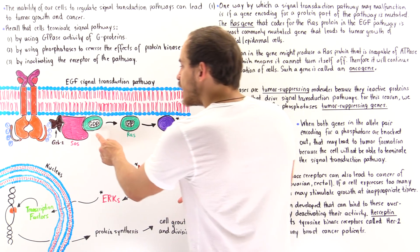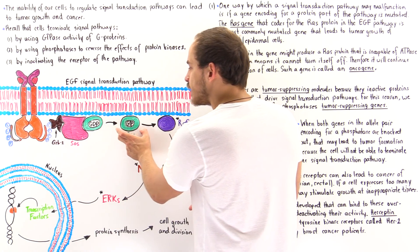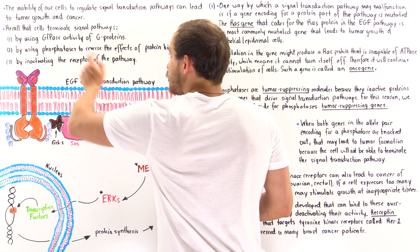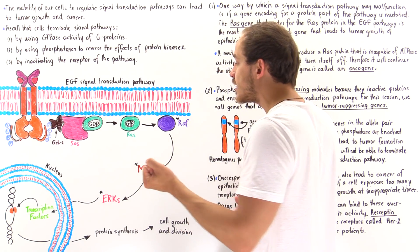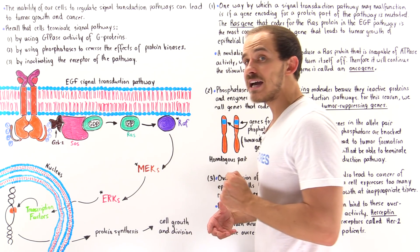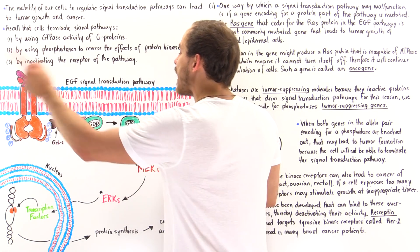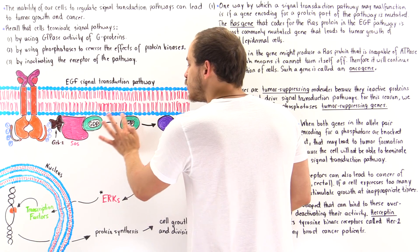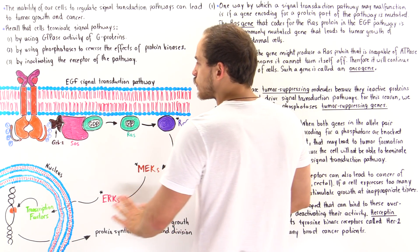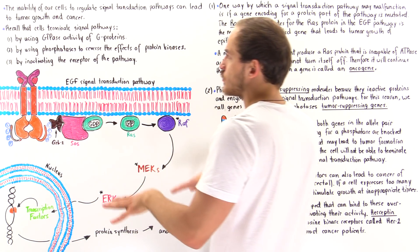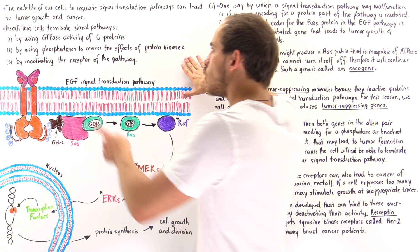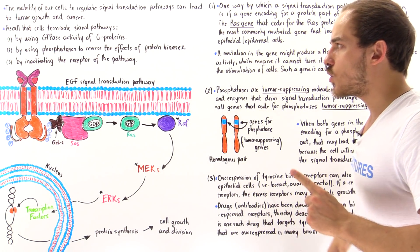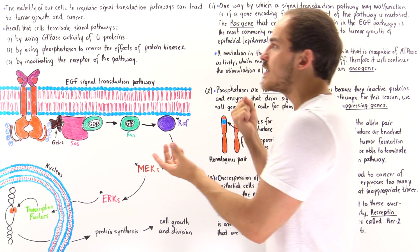Method number one: because we have a G protein involved, and G proteins have GTPase activity, they have a built-in clock that allows them to shut themselves down following activation. Sometime after the G protein has been activated into the GTP form, it uses its GTPase activity to take a water molecule from the cytoplasm and hydrolyze the GTP back into GDP. Once it inactivates itself, it can no longer stimulate the rest of the process, and the pathway essentially shuts down as a result.